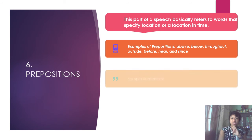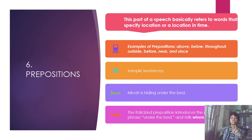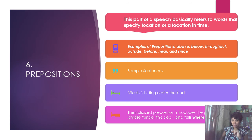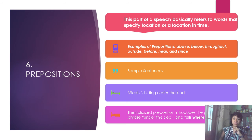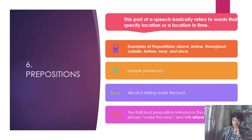Now the prepositions. This part of speech refers to words that specify location or location in time. Examples of prepositions are: above, below, throughout, outside, before, near, and since. For example: 'Maki is under the bed' — 'under' specifies location. 'Maki is near the bed' — 'near' also specifies location.